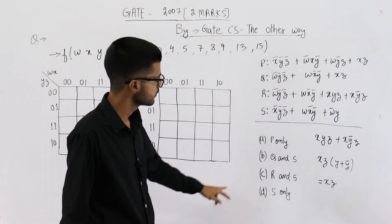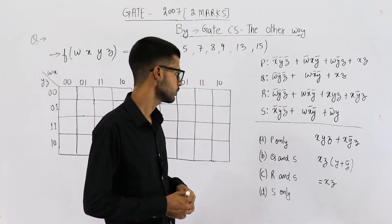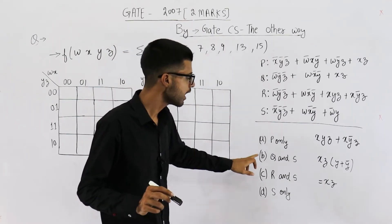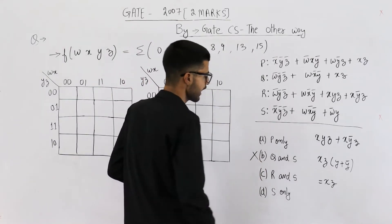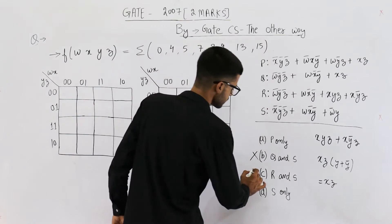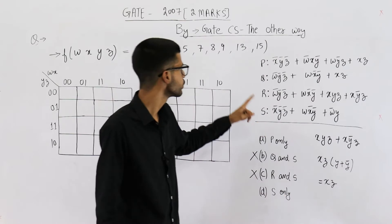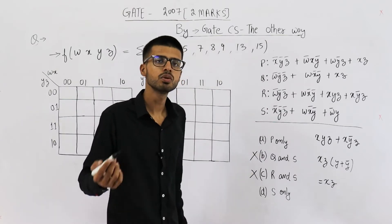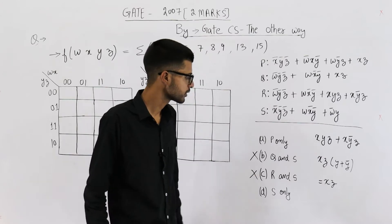Which also means if any option contains Q, it has to contain R and vice versa. Option B says Q and S — meaning Q and S are not equivalent to this given function. But we also know R is equivalent to Q, so if Q is not equal to f, then R also cannot be equal to f. So option B can be rejected because it contains Q but not R. For similar reason, option C — which says R and S are both not equal to f — can also be rejected, because if R is not equal to f, Q will also not be equal to f.